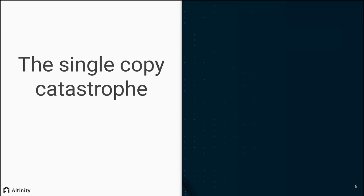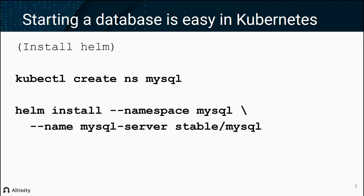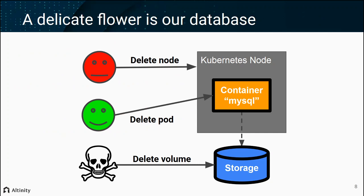The first problem I want to discuss is what I call the single copy catastrophe. One of the wonderful things about Kubernetes is how easy it is to set up complex applications. Using Helm, a popular tool to create deployments in Kubernetes, I can create a namespace MySQL using kubectl, then run a single-line Helm install command to install a MySQL server. A few seconds after I run this command, I will see a database running in a pod on Kubernetes with an attached persistent volume. Unfortunately, this database is kind of a delicate flower, particularly when we're thinking about data loss.